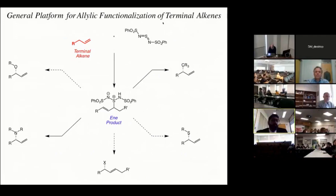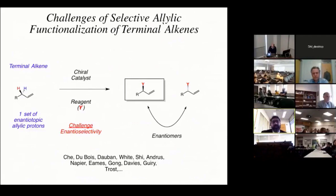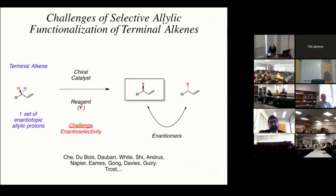The last thing I want to share is our more recent goal of applying this concept not just to terminal alkenes, but to internal alkenes. The stereoselective allylic functionalization of internal alkenes is an important problem in our field that has been studied considerably less than terminal alkenes. With terminal alkenes, you're effectively trying to distinguish between two enantiomers, and there have been many beautiful approaches using chiral catalysts and chiral reagents to realize enantioselective allylic aminations, allylic alkylations, and other processes.